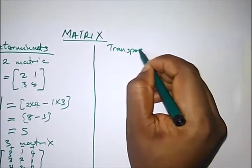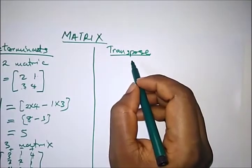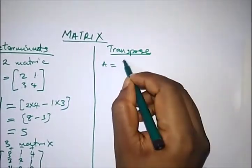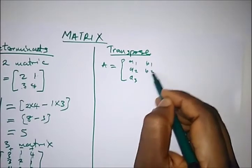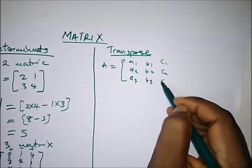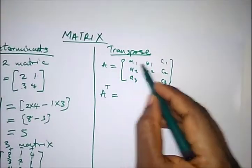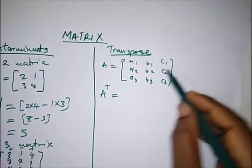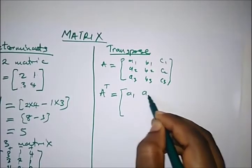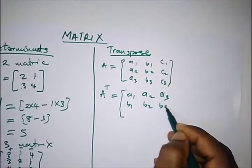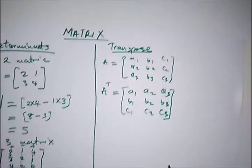Now, how do we solve for a transpose? If given a question to find the transpose of a matrix, the transpose is just a rearrangement of a particular matrix. For instance, if we have a 3 by 3 matrix [a1, a2, a3; b1, b2, b3; c1, c2, c3], the transpose A^T turns each column into a row, giving us [a1, a2, a3; b1, b2, b3; c1, c2, c3] rearranged accordingly.